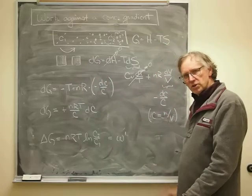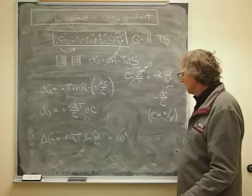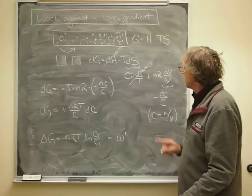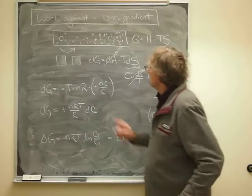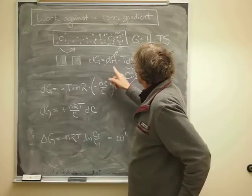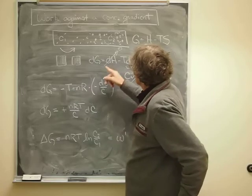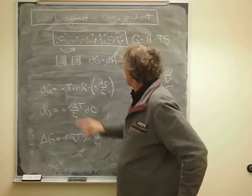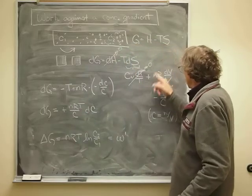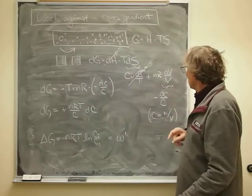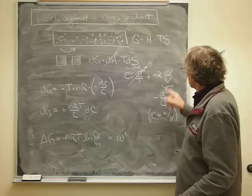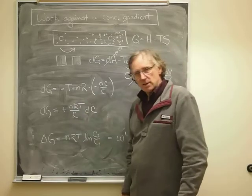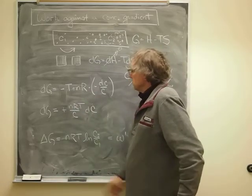So we put that all together. dG is... that was taken away because it was an ideal solute, that just leaves minus T times the change in entropy, which turned into that quantity there times nR. So I have the change in Gibbs energy now in going from that tiny little step, and the minuses cancel out there.